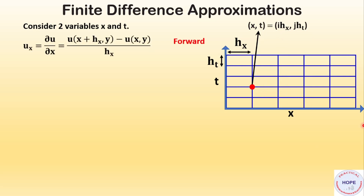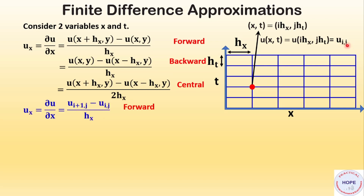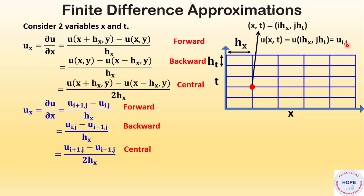The first partial derivative u_x can be written using forward difference, backward difference, or central difference approximation. We can use any of these three expressions. u(x, t) can be written as u(i, j), where i is the position index and j is the time index. Hence u_x can be written in forward, backward, or central difference form. We can also write the second partial derivative u_xx using the central difference approximation formula.